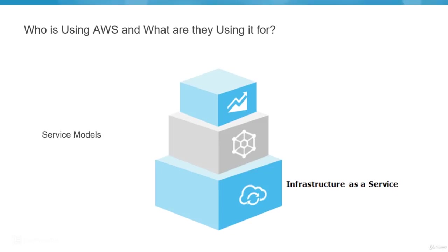The second category is Platform as a Service (PaaS), which includes the underlying infrastructure. For the Oracle example, it would give you Oracle already installed, and using normal tools like SQL Developer you can connect to the Oracle instance and do your work. You won't be able to remotely access the server, but installation, DBA activities, backups, and master-slave configuration are all taken care of by the PaaS provider — you just specify your requirements.